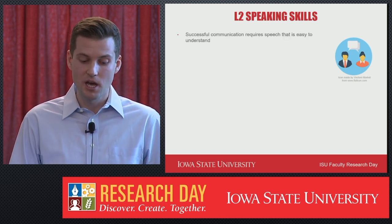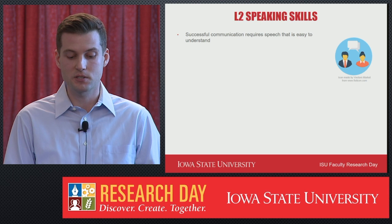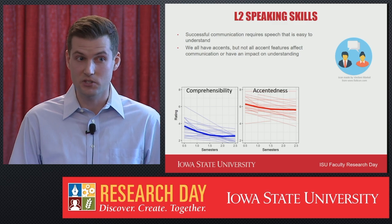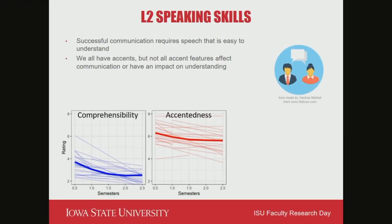Turning to L2 speaking skills, we know that successful communication requires speech that is easy to understand. At the same time, we all have accents in our native language and in the additional languages that we speak, but not all accent features affect communication or have an impact on understanding. The two plots that you see here illustrate that point. On the left, you have a plot of comprehensibility or ease of understanding over time, and on the right, you have a plot of foreign accent or accentedness over time for a sample of novice to intermediate L2 learners. Lower scores indicate better performance, and you can see that although learners were rated as relatively comprehensible or easy to understand, they were also perceived as having a moderate to strong foreign accent.